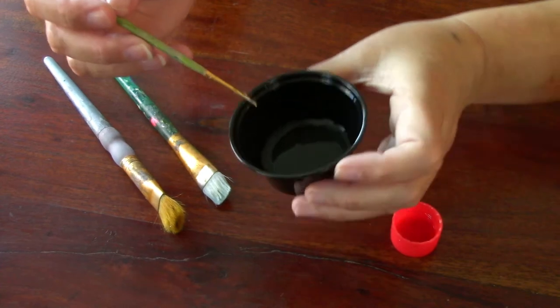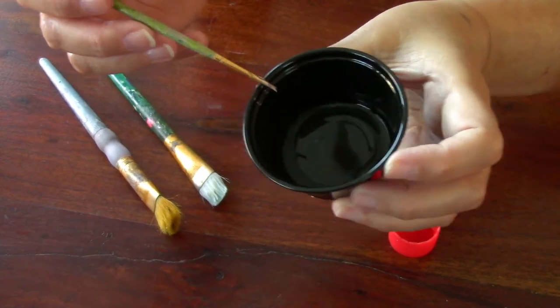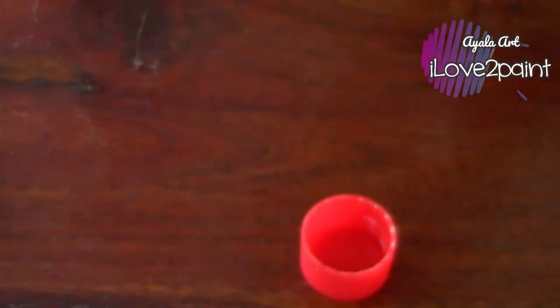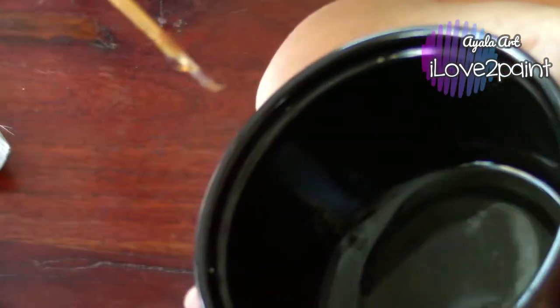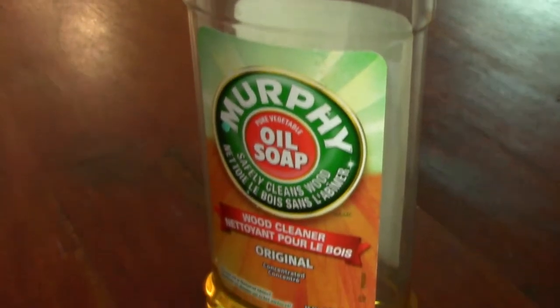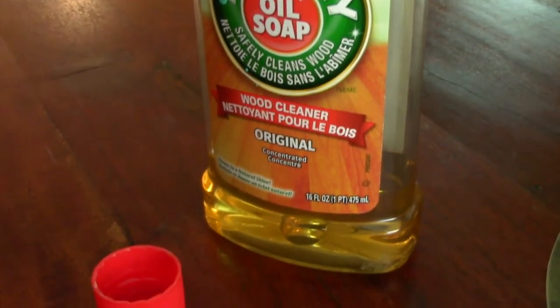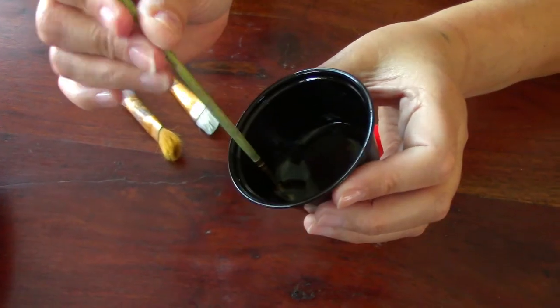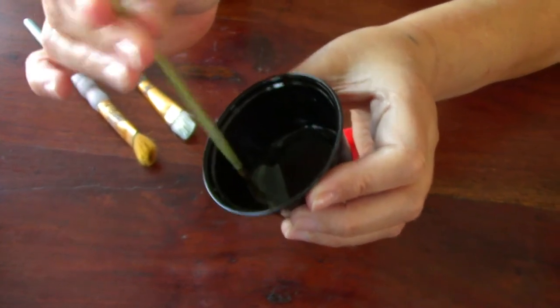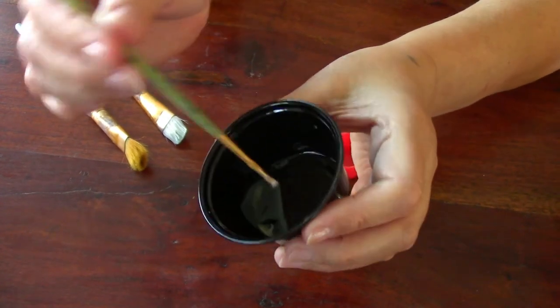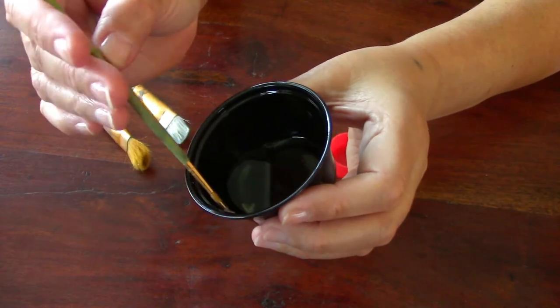As you can see, if you can see closer in the camera, this brush was all stiff. I just put a little bit of the Murphy oil soap in a tiny container and all you do is just twirl your brush until the paint, the dry paint, loosens up a little bit.